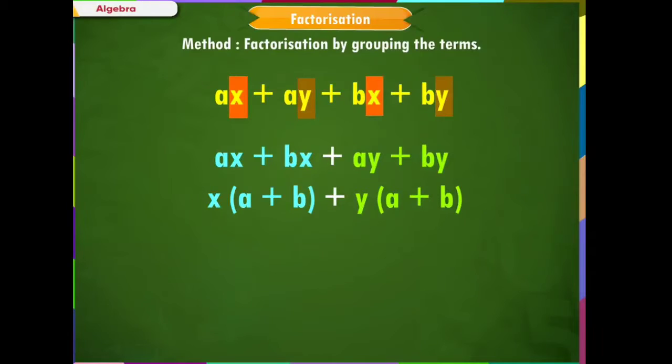Now, in these two terms, we see that (a + b) is a common factor. So, we can write it as (a + b)(x + y).